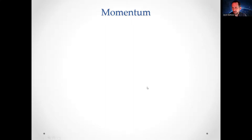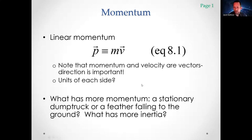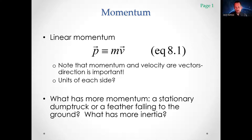What has more momentum — a stationary dump truck or a feather falling to the ground? The feather does! The dump truck's velocity is zero, so big mass times zero is still zero. The feather has a small mass times a small velocity, which is bigger than zero. Now, what has more inertia? The dump truck — inertia and mass are synonymous for our purposes. The stationary dump truck has more inertia but less momentum than the moving feather.